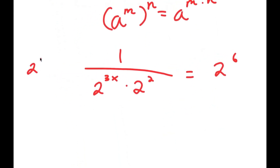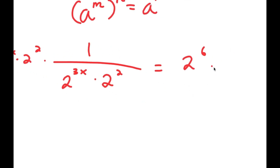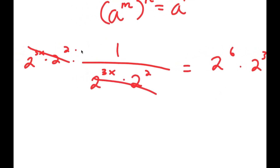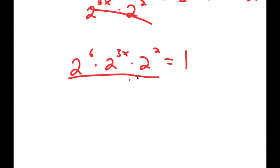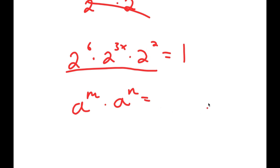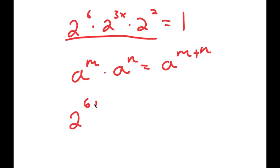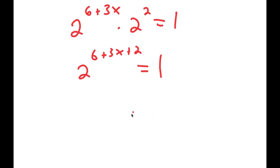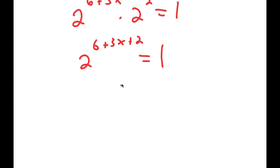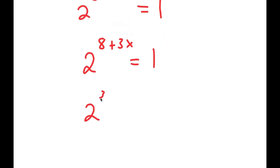Now I can multiply both sides by 2 to the power of 3x times 2 squared. So these terms cancel out and I'm left with 2 to the power of 6 times 2 to the power of 3x times 2 squared is equal to 1. Because all these powers have the same base, I can add the exponents: 2 to the power of 6 plus 3x plus 2 equals 1. Now 6 plus 2 is 8, so I get 2 to the power of 3x plus 8 is equal to 1.